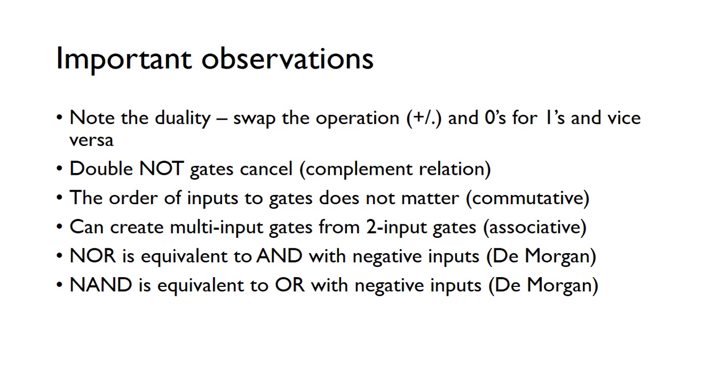So there's some important observations from these rules. There's the duality: for all the laws you can swap the operation, so if it's an AND you can swap it to an OR, and then swap the zeros for ones, and you'll end up creating other rules. We know that double NOT gates cancel, so the complement relation becomes very useful when we're simplifying circuits. The order of the inputs to gates doesn't matter, so that comes from the commutative laws. And then the associative laws show that we can create multi-input gates from two input gates. A three input gate you can actually create from two two-input gates, which we'll see next.